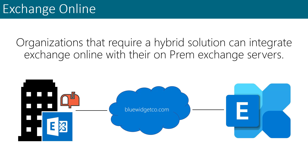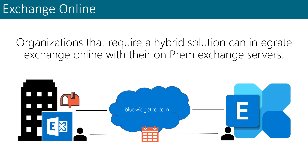Organizations that require a hybrid solution can integrate Exchange Online with their on-prem Exchange servers. This can be done by creating what is called a hybrid deployment. A hybrid deployment allows the Exchange Online organization and the on-prem Exchange organization to share a single namespace or domain for messaging.